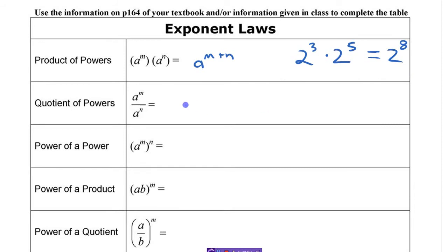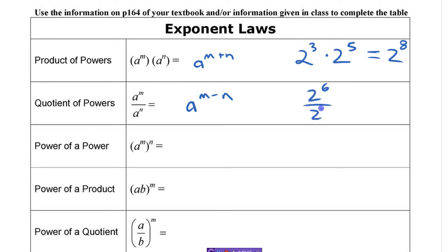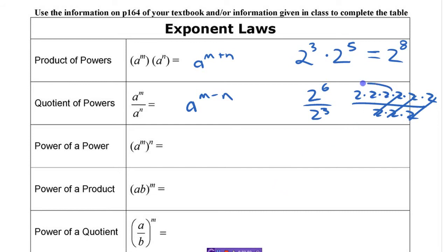Same thing here when you're dividing — instead of adding exponents, you subtract them. If you have 2 to the 6th divided by 2 to the 3, you have 6 of them on top and 3 on the bottom. Each of those cancel out, divide to 1, and you're left with 3 — so this is 2 to the 3. Subtract those exponents.